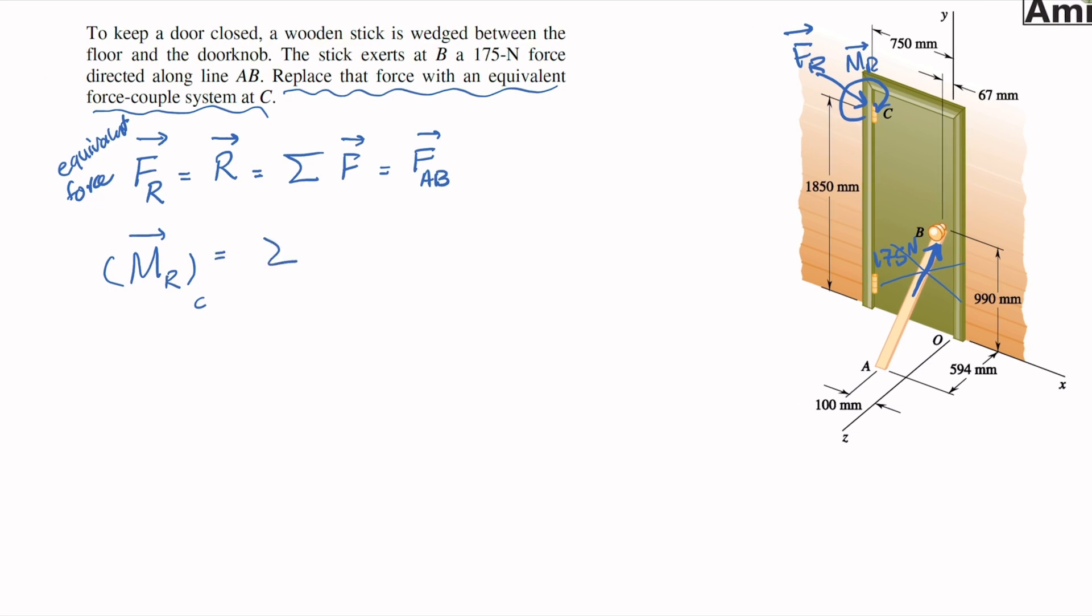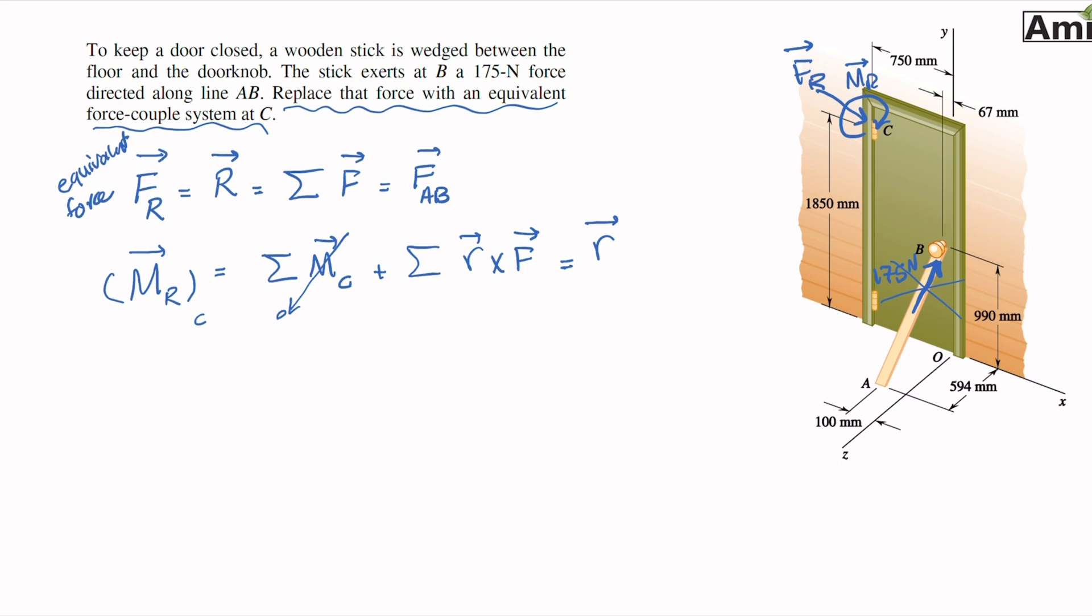The equivalent couple system about point C is summation of all free couples plus summation of all R cross F's. I explained this in a separate lecture. In this problem we only have a force, so there's no free couple anywhere, and we only have one force. The summation turns into the position vector from point C - it could be to A or to B, so it could be RCB or RCA. It doesn't matter because we go from point C to the line of action of this force, cross FAB.